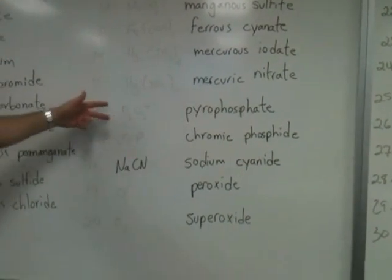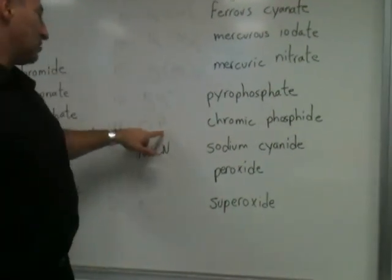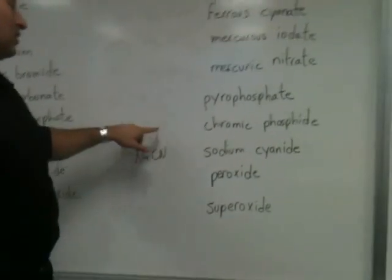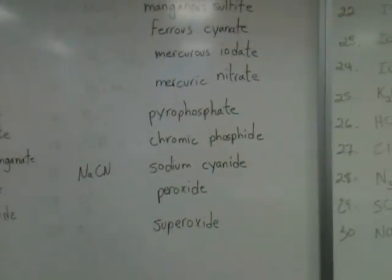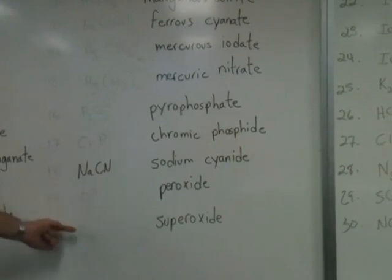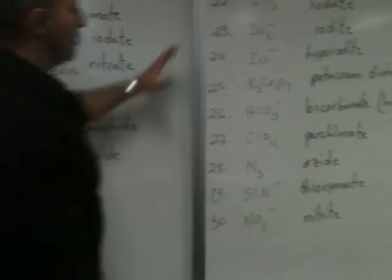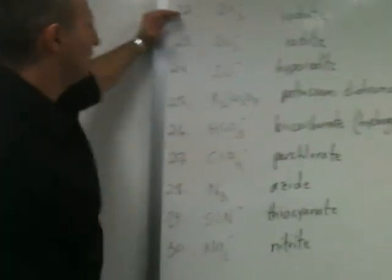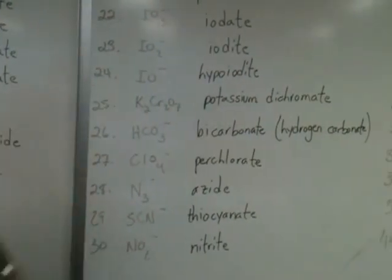This is pyrophosphate — it's just an anion. Phosphide is minus three, therefore this is chromium plus three, so we call it chromic phosphide. Sodium cyanide, peroxide, superoxide. Then the iodate series: periodate, iodate, iodite, hypoiodite.